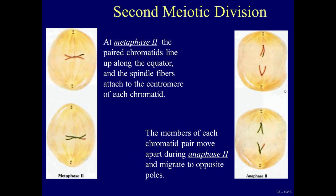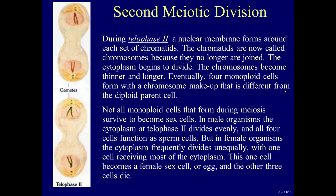At metaphase II, the paired chromatids line up along the equator, and the spindle fibers attach to the centromere of each chromatid. The members of each chromatid pair move apart during anaphase II and migrate to opposite poles. During telophase II, a nuclear membrane forms around each set of chromatids. The chromatids are now called chromosomes because they are no longer joined. The cytoplasm begins to divide. Eventually, four monoploid cells form with a chromosome makeup that is different from the diploid parent cell.